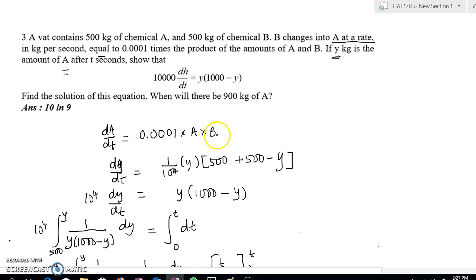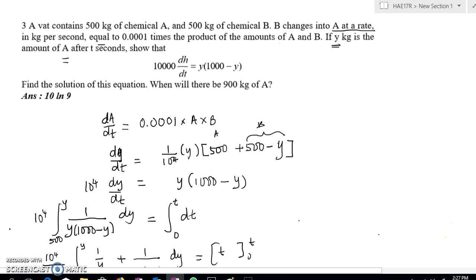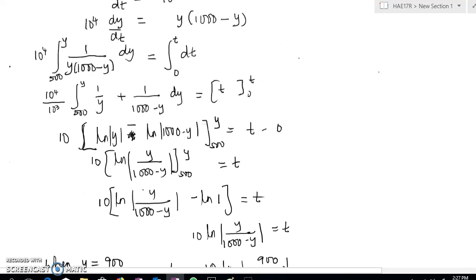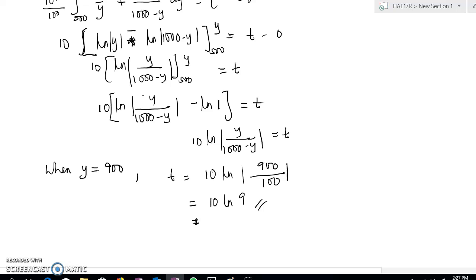So B becomes whatever remains of B, how much B is converted to A. So let's assume that the amount converted to A is Y, so the amount of B is 500 minus Y. So this one represents B, this one represents A initially. All right, so that's all for today. Thank you for watching, bye bye.